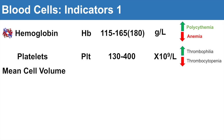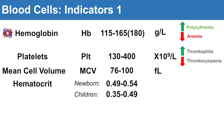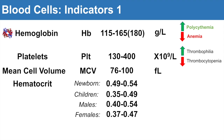Another indicator is mean cell volume, or MCV. The range is typically 76 to 100 femtoliters, which is just the average size of erythrocytes. Another measurement is hematocrit, which differs with age groups and genders. For newborns it's about 0.49 to 0.54; for children, 0.35 to 0.49; for males, 0.4 to 0.54; and for females, 0.37 to 0.47. These are ratios — essentially percentages — so hematocrit is the percentage of erythrocytes in the blood.